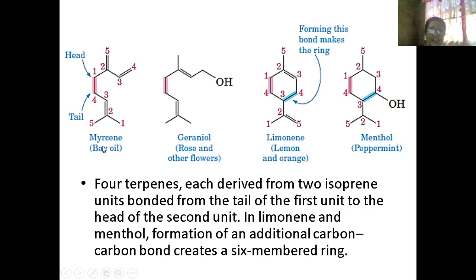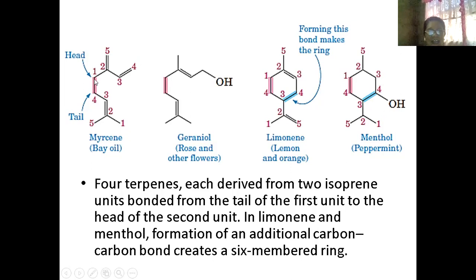For instance, this is bay oil — myrcene. Where is our isoprene unit? This is one, two, three, four — first isoprene unit. Then the other one: one, two, three, four. Where is the head? This is the head, and this is the tail. So myrcene, a bay oil, has two isoprene units. Geraniol also has two isoprene units.